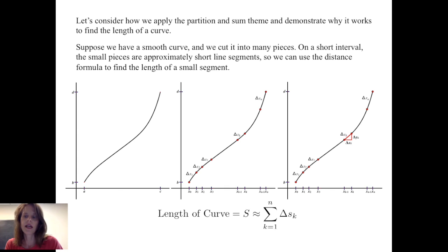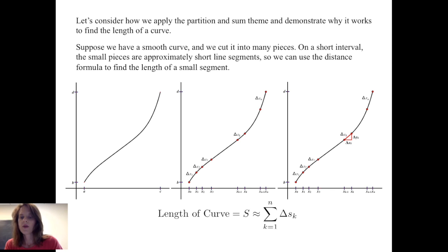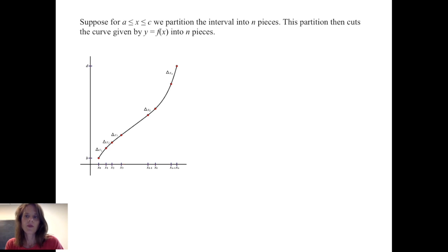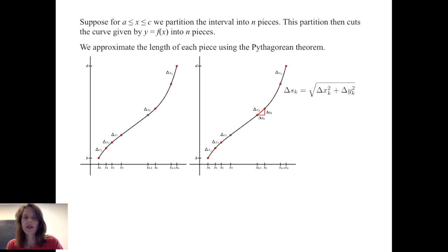If I want to find the length of Δs_k, the k-th piece, on the short interval between x_{k−1} and x_k, that curve piece actually almost looks like a straight line. So I'm going to think of it as the hypotenuse of a right triangle with legs Δx_k and Δy_k. Then the length of the curve s is approximated by summing those pieces Δs_k from k = 1 to n. I approximate the length of each piece using the Pythagorean theorem: Δs_k ≈ √(Δx_k² + Δy_k²).